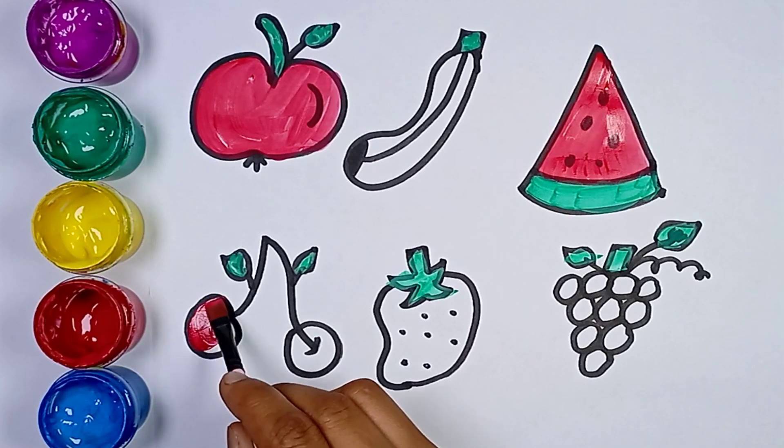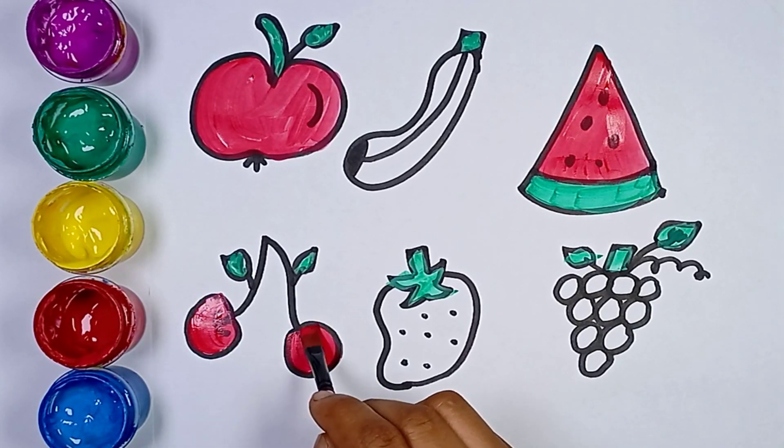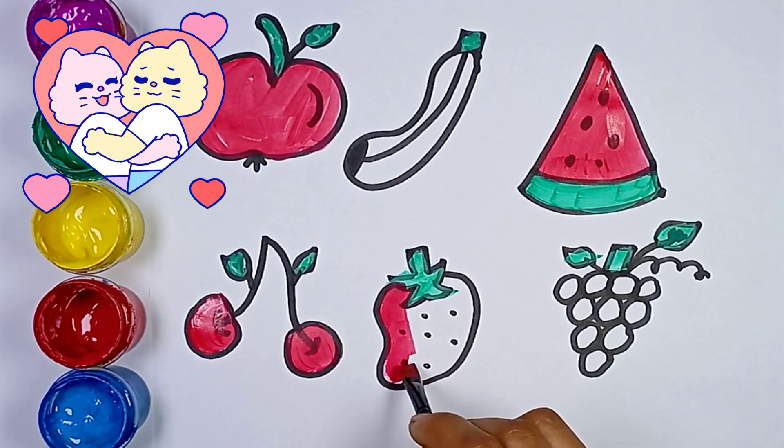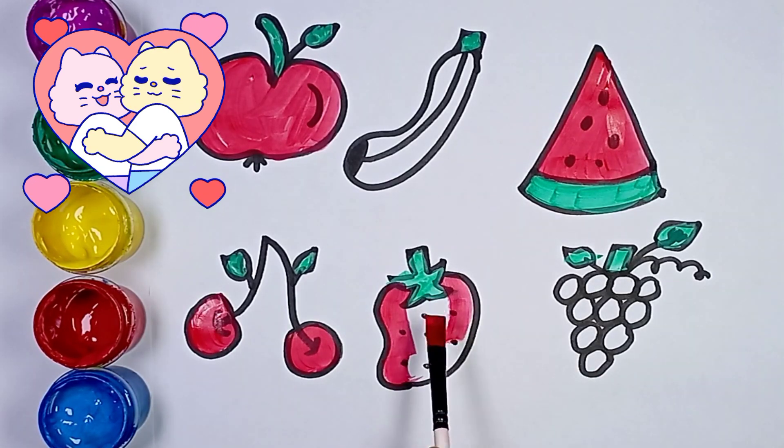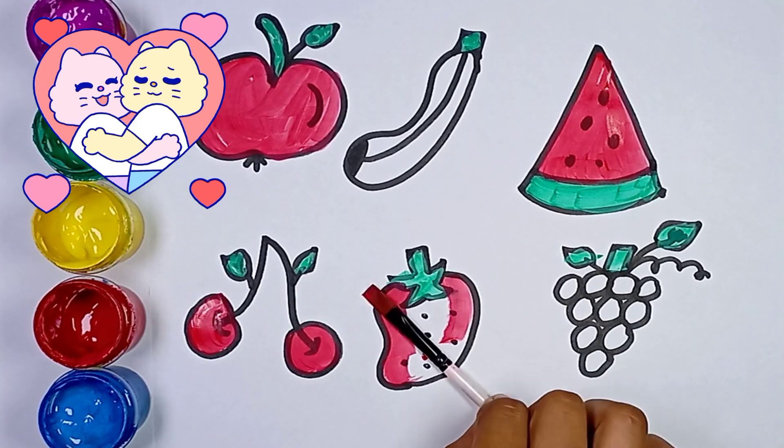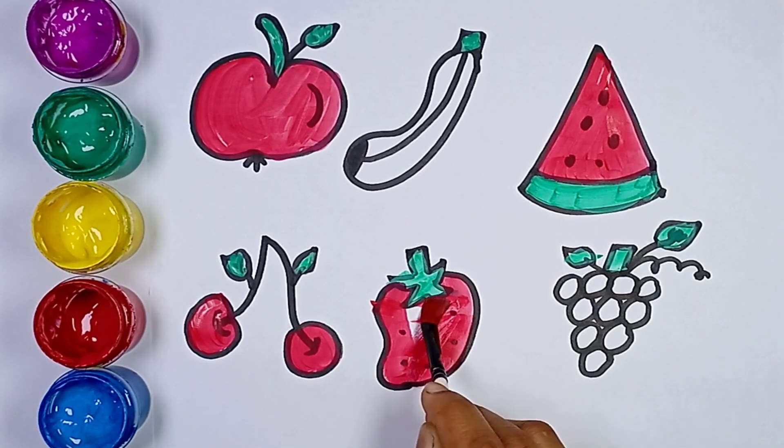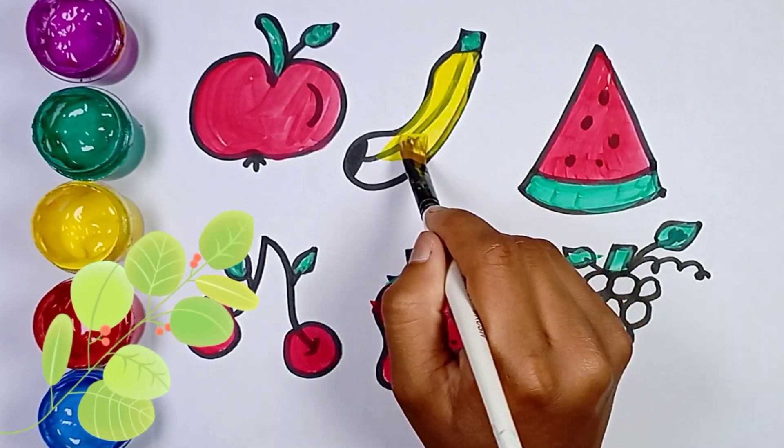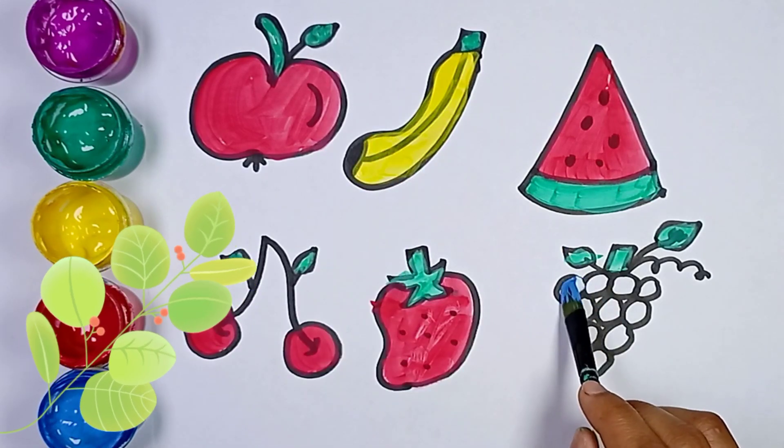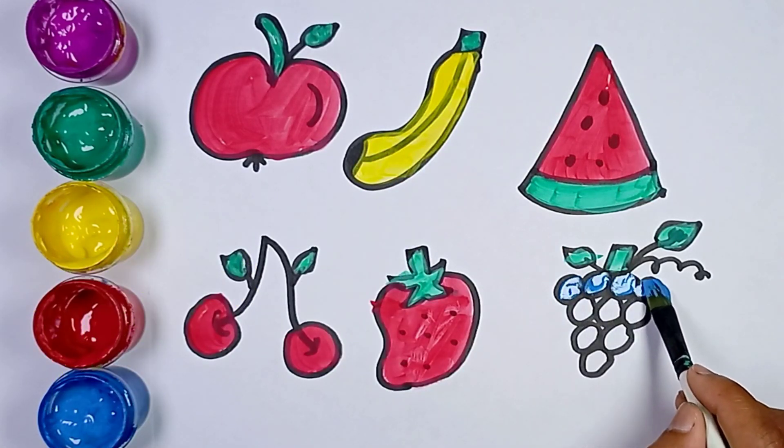Come A-B-C, A-B-C, A-B-C, H-I-J-K, L-M-N-O, Q-R-S, T-U-V, W-X-Y-and-Z. Now I know my ABC, next time won't you sing with me?